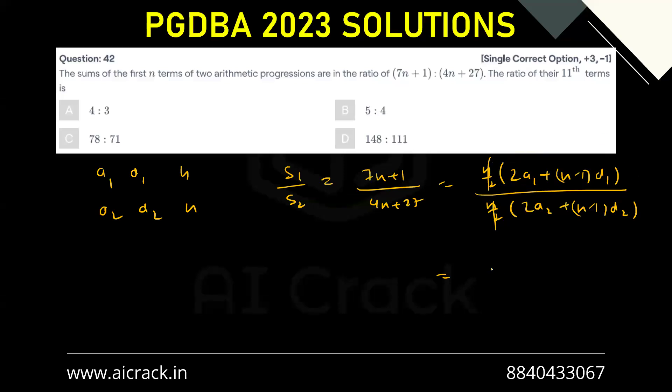So let's do one thing. Let's write it as a1 plus n minus 1 by 2, d1 divided by a2 plus n minus 1 by 2, d2.